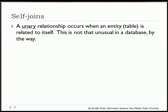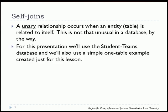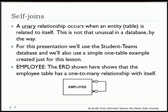A unary relationship occurs when you have a table related to itself, and this is not that unusual in a database. We'll be working with the student teams database, but we are also going to create a simple one-table example to illustrate a unary relationship.